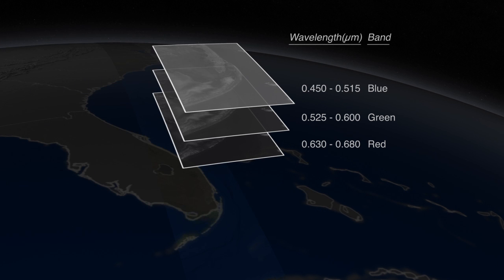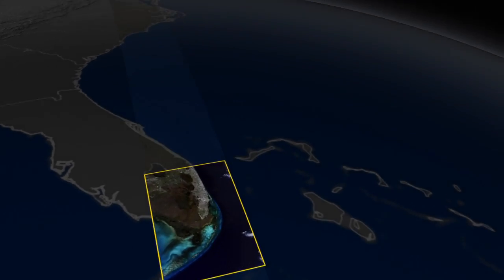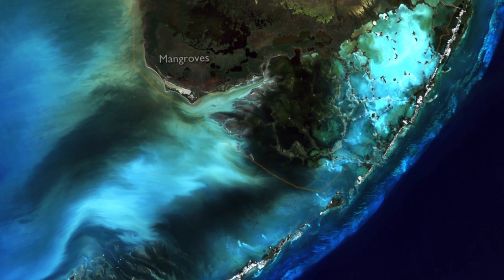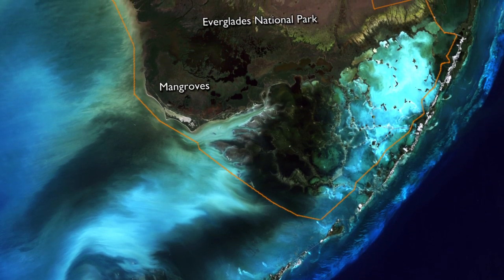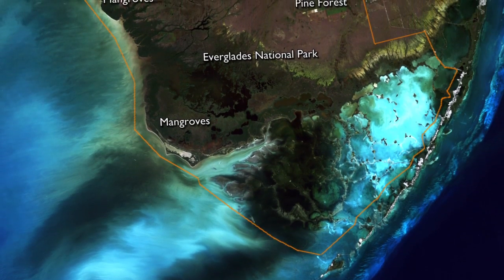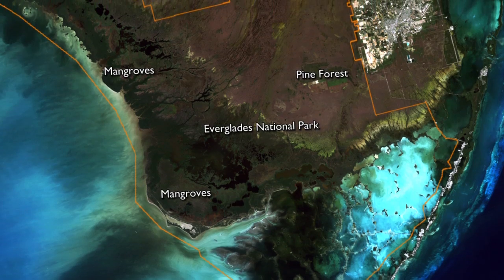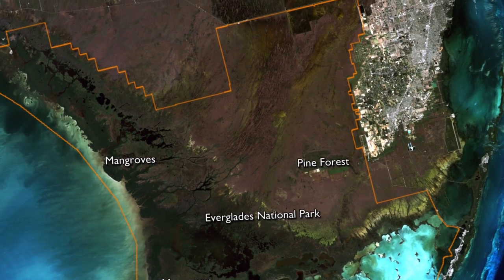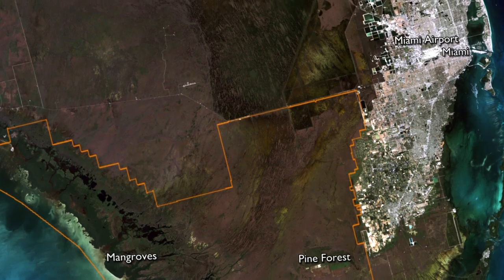We can combine any three of the images to create different depictions of Earth's surface. What you're seeing now is a Landsat image of Florida, made with data from the blue, green, and red visible wavelengths. We call this a natural color image because it looks approximately like what we would see with our naked eye if we flew far above Florida.